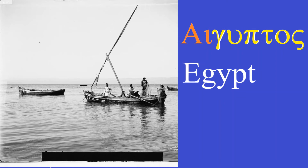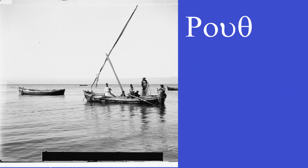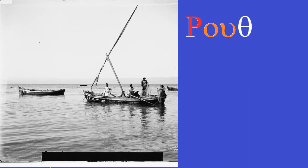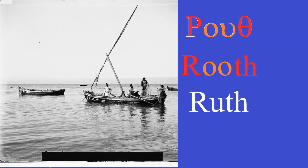The next diphthong is much more straightforward — it's OU, pronounced like 'oo' in 'noon.' It's not 'ow' like 'ouch.' It kind of looks like something we would recognize in English: the OU is 'oo.' So we can sound out this word: 'Ruth.'